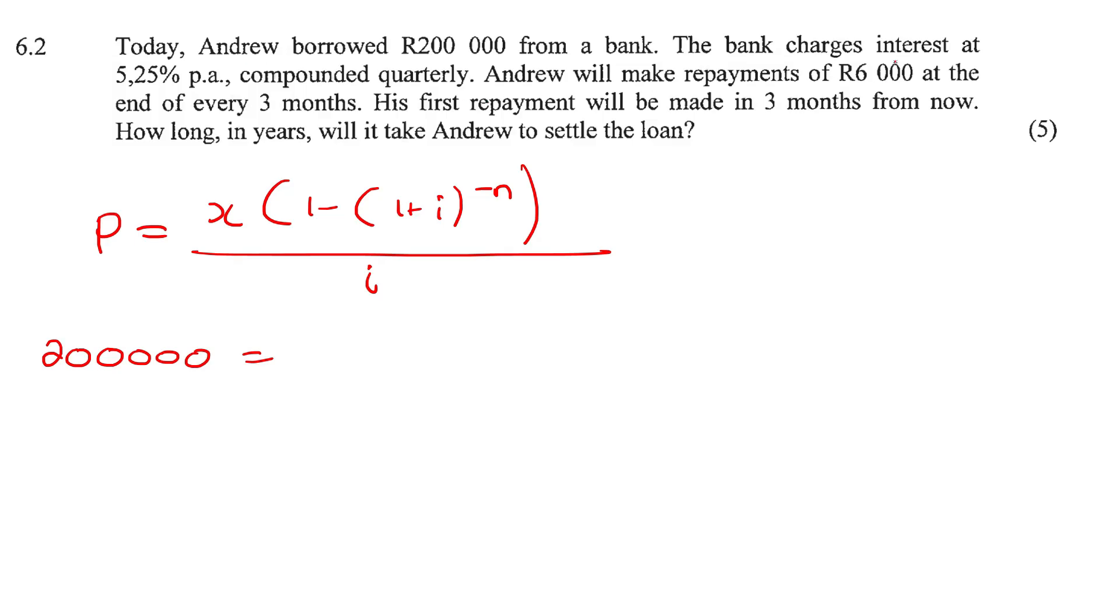The payment is 6,000. So we'll put that in over there. The interest is 5.25%. Now they said it's compounded quarterly. So we'll put a four over here.